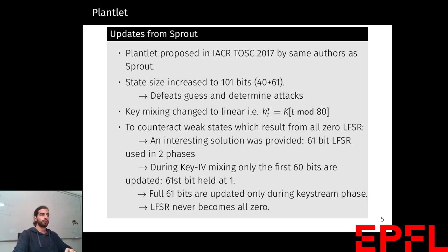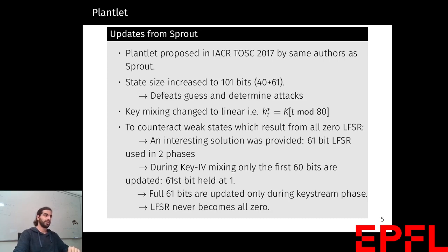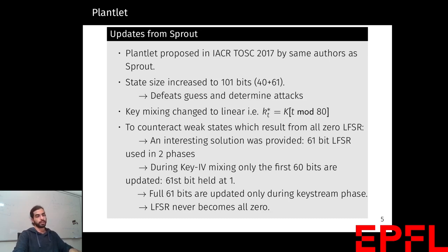To avoid the guess-and-determine attack, the LFSR size in Plantlet was increased to 61 from 40. To avoid the attack by Eski and Ankara, the key mixing was changed to fully linear. And a neat trick was used to avoid Banik's attack. Banik's attack used the fact that with a specific IV, one can set all bits of the LFSR to zero. To avoid this, the authors proposed two phases of LFSR update: during the key-IV mixing or initialization phase, the 61st bit of the LFSR stays fixed to one while the rest of the LFSR gets updated; and in the keystream generation phase, all 61 bits are updated.